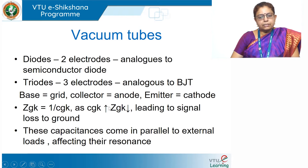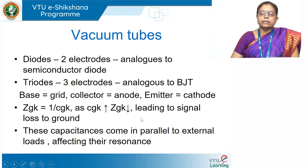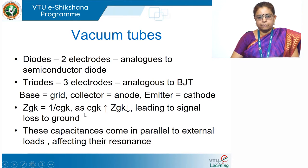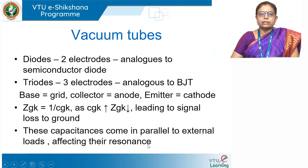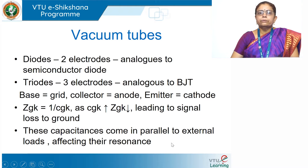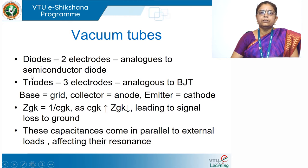This is the key point to remember in order to understand why conventional triodes are not suitable at high frequencies. Just remember: impedance is inversely proportional to capacitance. Capacitance increase leads to impedance reduction, and since the impedance reduces, there is loss of signal to ground. The electronic signal always follows the least impedance path. These capacitances come in parallel to external loads and affect their resonance.